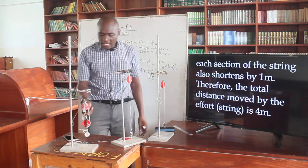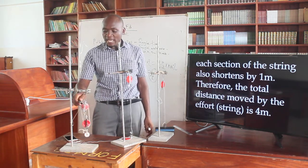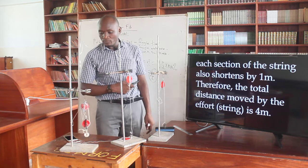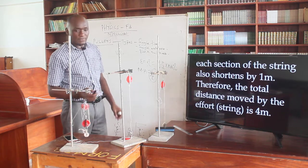Now, you notice that if the effort is moving one meter, it means the other one is moving four. So what does it imply? This part I want you to understand very clearly.